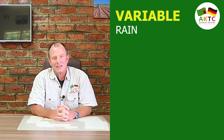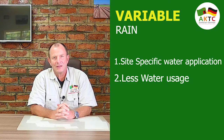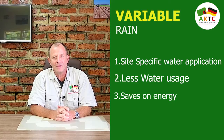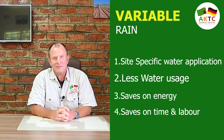Variable Rain has the following advantages: site-specific water application, which results in an optimum water application quantity; we save energy; we save labor, because the irrigation runs for less time. And all in all, this is good for the environment and for the profit of the farmer.